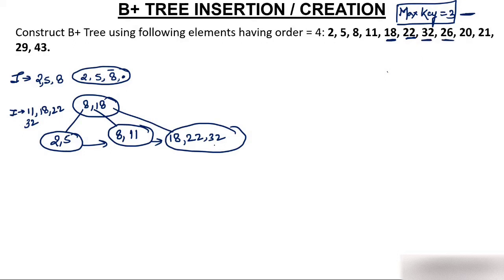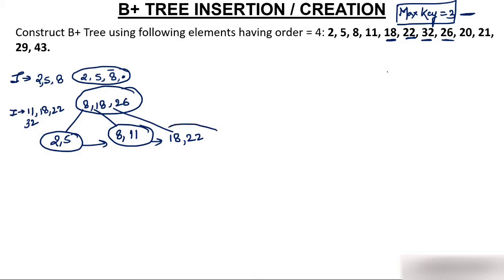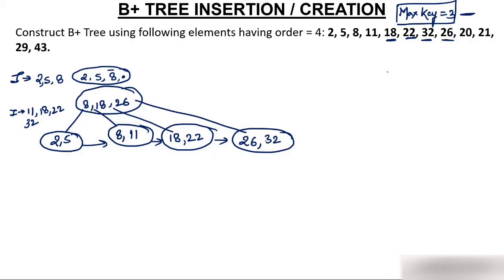Now insert 26. Where can 26 be inserted? 26 would come here in the right node, but we cannot insert it — the node is full. Since we are considering right bias, it will split from 26. So 26 goes up to the parent. This node splits in two parts from 26: one part has 18 and 22, and after 26 you have 26 and 32. These leaf nodes are connected with each other.